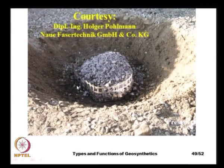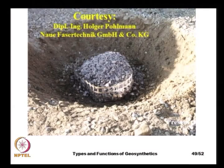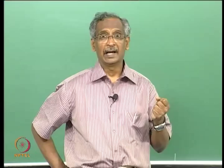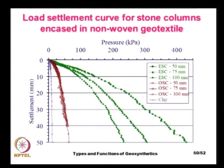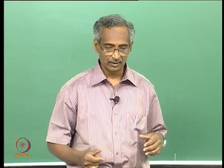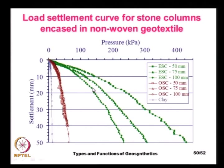Here we see an encased stone column using a geogrid — geogrids can be used because they have very high tensile strength and can provide very good confinement. In areas where contamination of the stone column material by soft clays is not anticipated, a geogrid can be used. Laboratory test data on encased stone columns are also shown here.